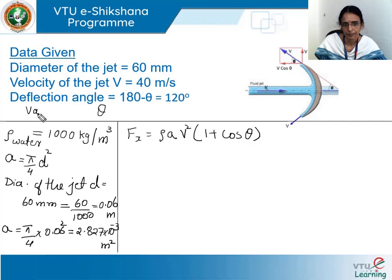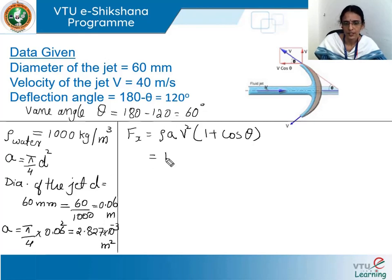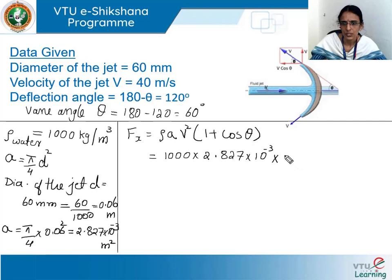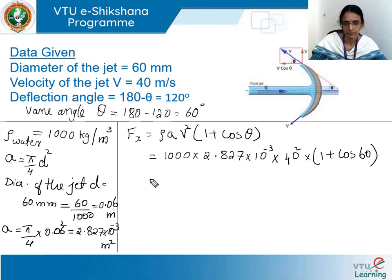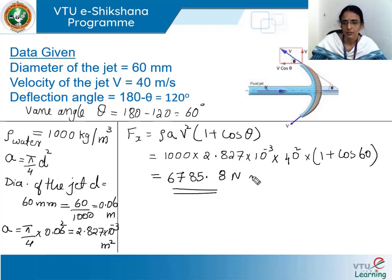Substituting all values in the expression: f_x is equal to 1000 into 2.827 into 10 to the power minus 3 into 40 squared into 1 plus cos 60. Calculating this gives f_x equal to 6785.8 Newton. This is the force exerted by the jet on the vane along the direction of the jet.